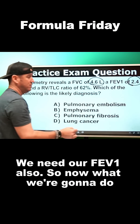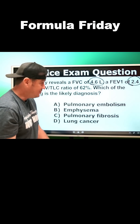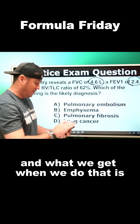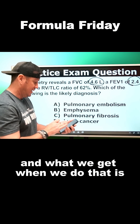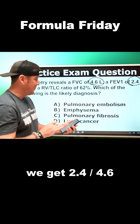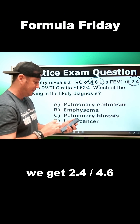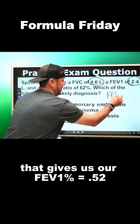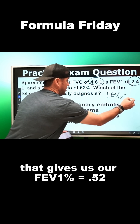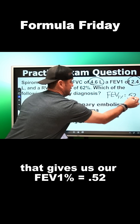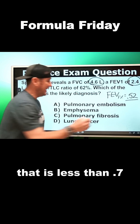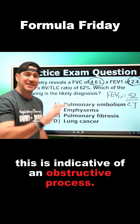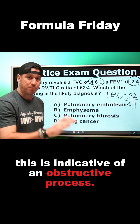We need our FEV1 ratio as well. So now what we're going to do is FEV1 divided by FVC. When we do that, we get 2.4 divided by 4.6, which gives us an FEV1% of 0.52. That is less than 0.7, and therefore this is indicative of an obstructive process.